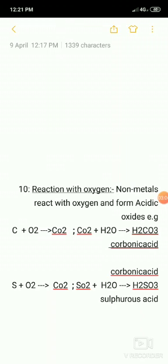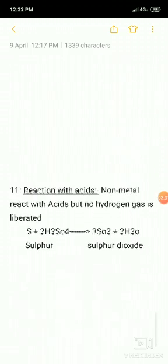Sulfur reacts with oxygen and forms sulfur dioxide. Sulfur dioxide reacts with water and forms H2SO3 sulfurous acid. When a litmus paper is dipped in these it turns red. Therefore we say that non-metallic oxides have acidic nature.